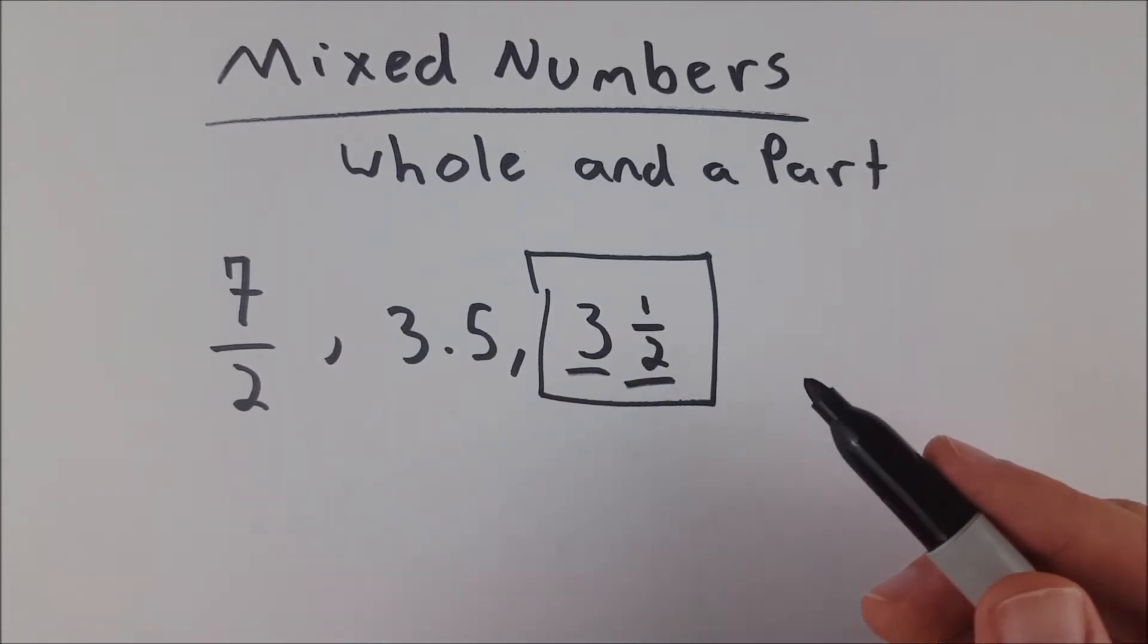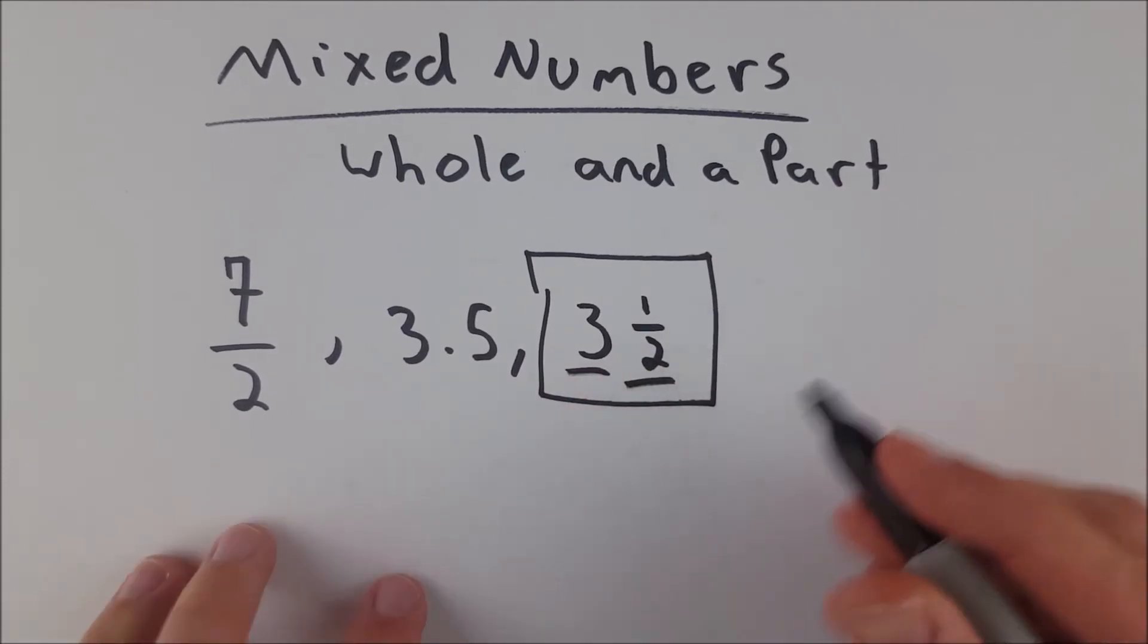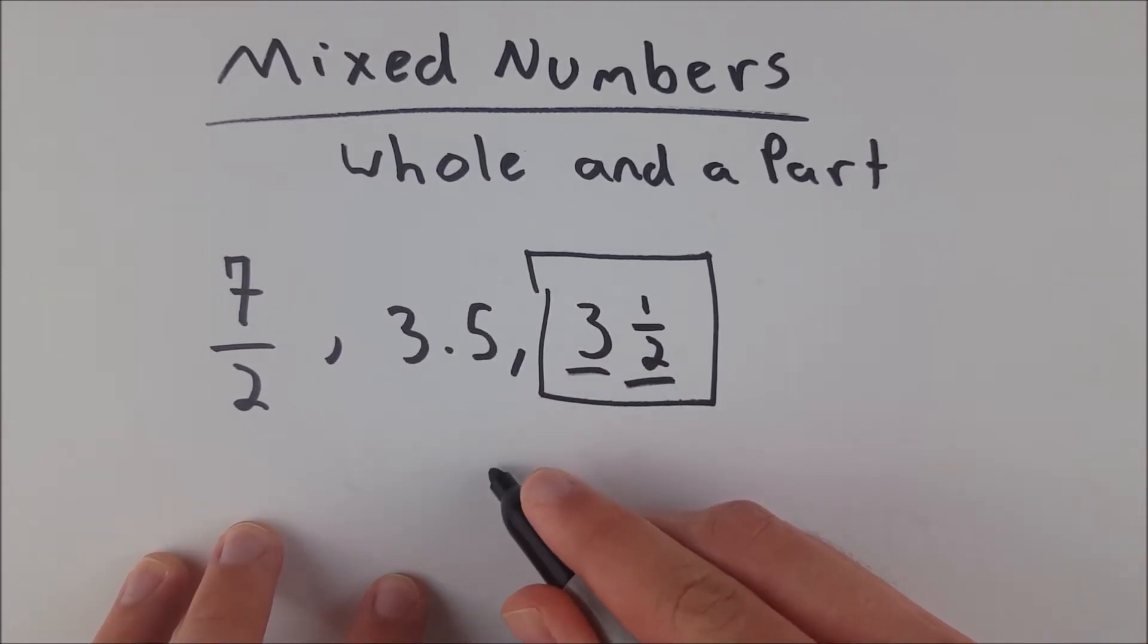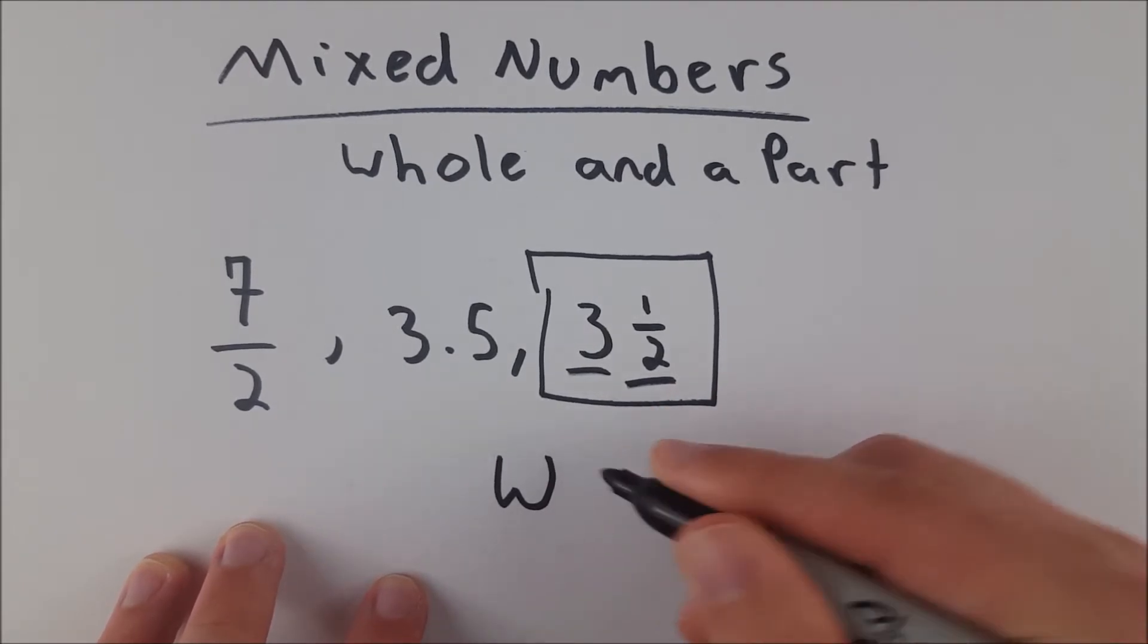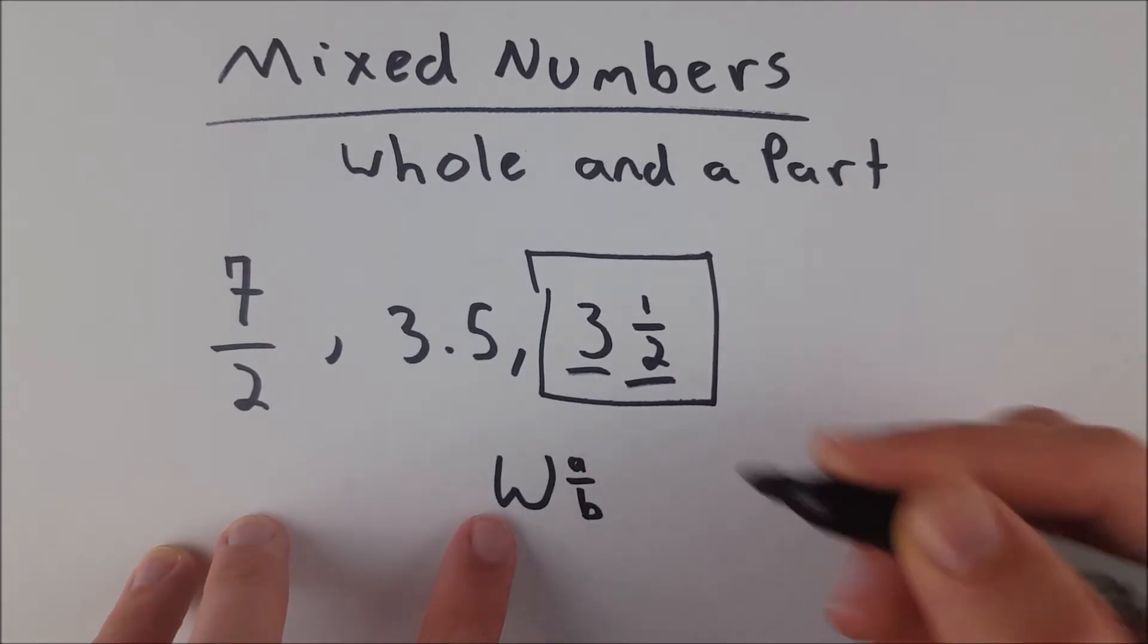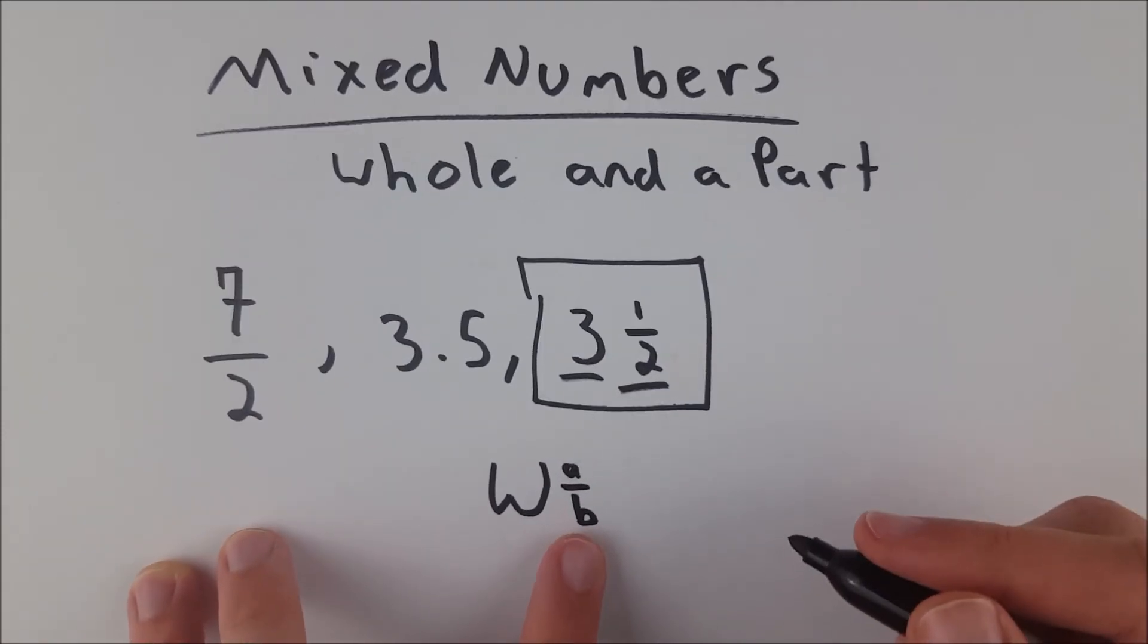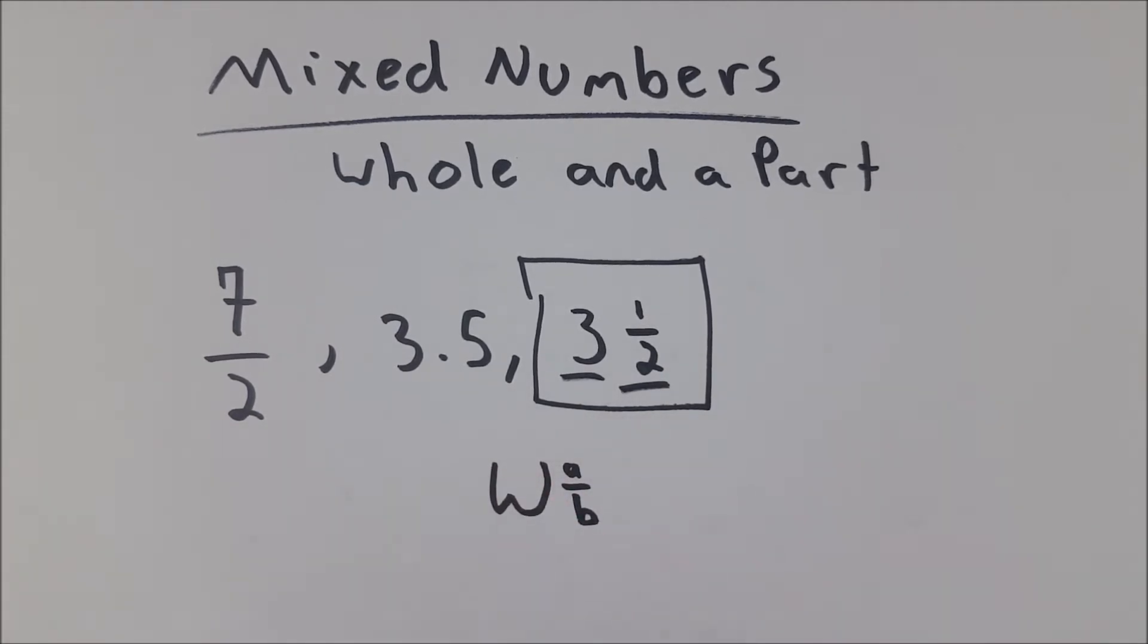So for it to be a mixed number, you need this bit over here next to your whole to be a proper fraction. You've got your whole and then you've got your part, which is just—I wish I could write it as a part. I'm just going to write it A over B. You've got your whole number and then you've got your A over B. This is your part, which has to be a proper fraction. So for example,